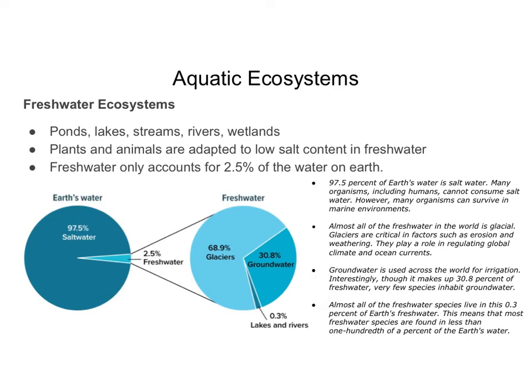Freshwater only accounts for 2.5% of the water on Earth. If we look at this graph on the left, this is all of the water on Earth — only 2.5% of it is freshwater. The other 97.5% is saltwater. Many organisms, including humans, cannot consume saltwater and survive, but there are a lot of organisms that do live in saltwater, and we'll get to those later.